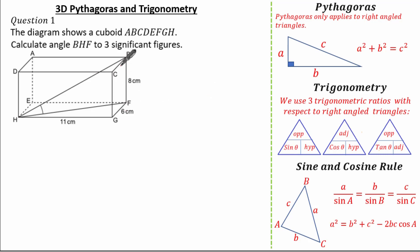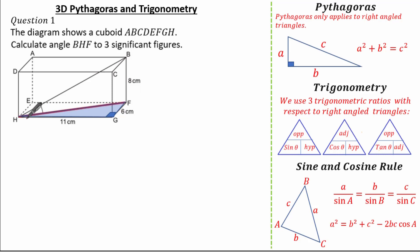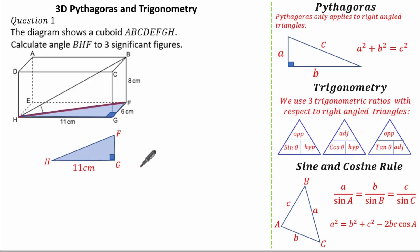Looking at this question, I've got a right-angled triangle, a length, and an angle, so I know I have to use Trigonometry. But in order to find this angle, I have to find another length. I spot a right-angled triangle at the bottom of the cuboid which will enable me to find length HF, which I can then use with triangle HFB. Pulling out this triangle, HG is 11 centimetres and FG is 6 centimetres — I can use Pythagoras.